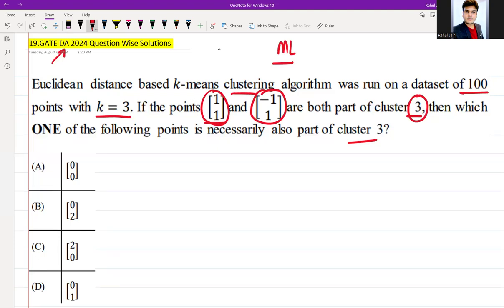Basically, the centroid of the cluster would likely be somewhere between these two points, since they belong to the same cluster. So we can calculate the centroid. For the centroid, two points are here, so I can write 1/2 because the value of n equals 2, and (1,1) and (-1,1).